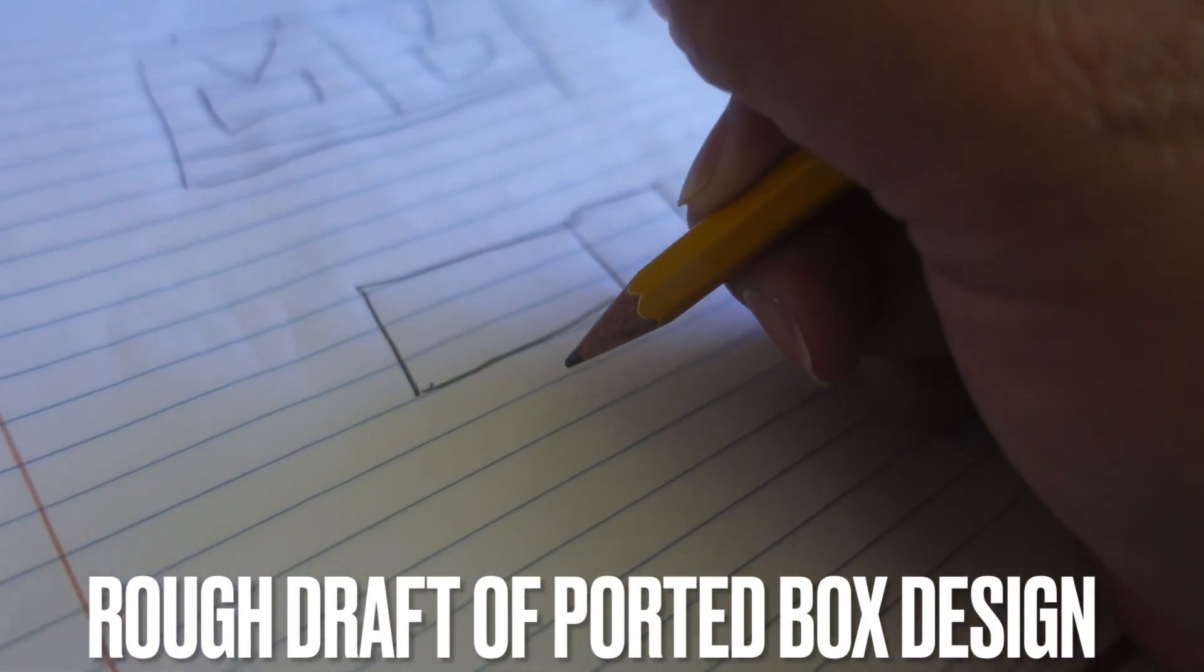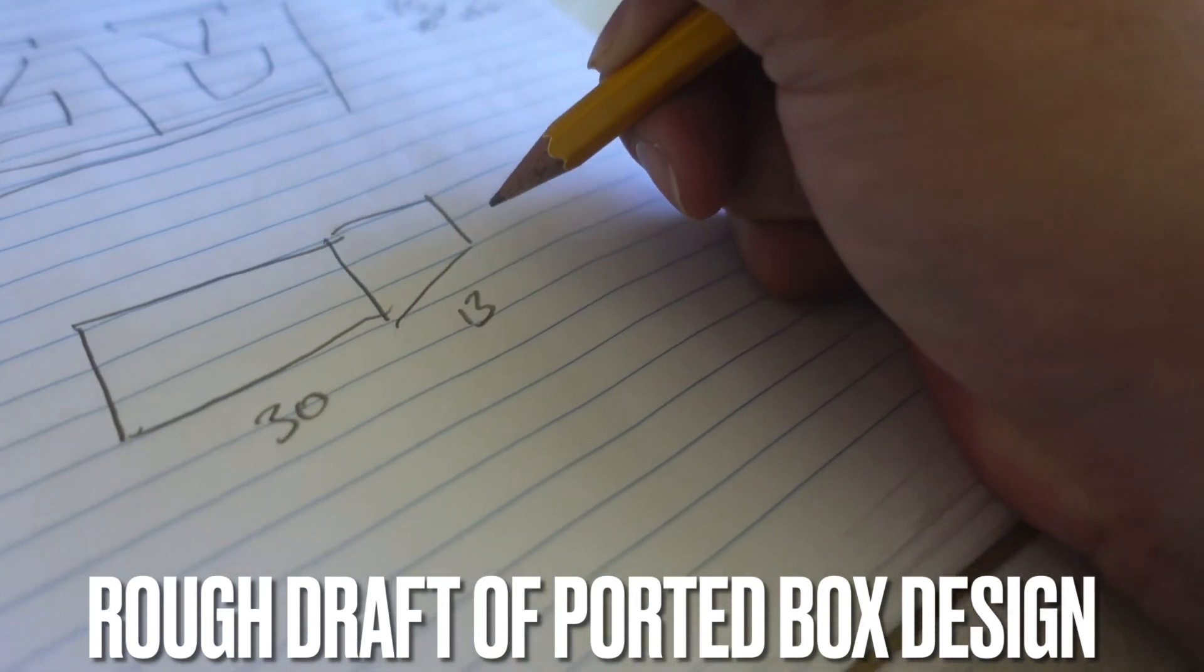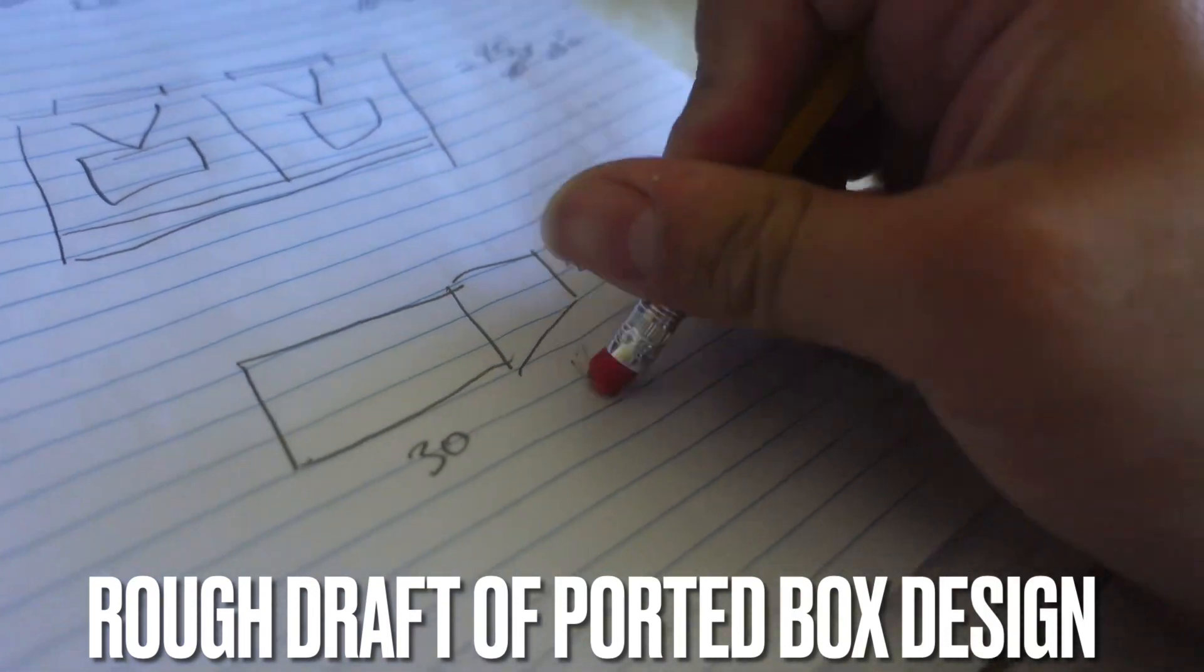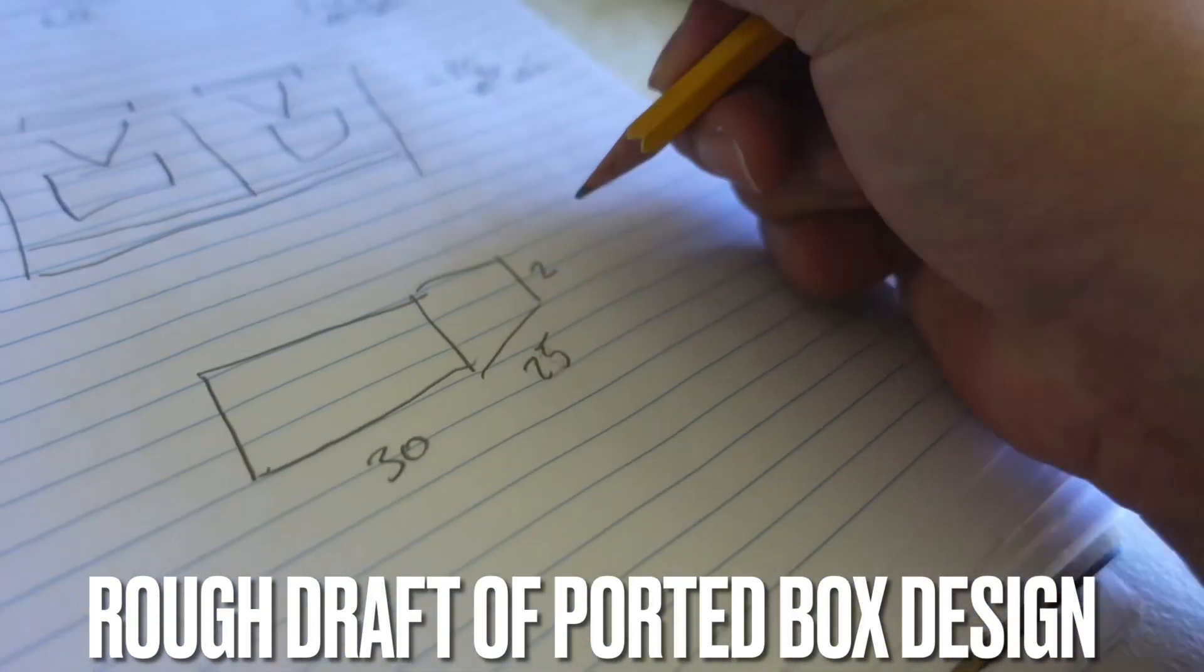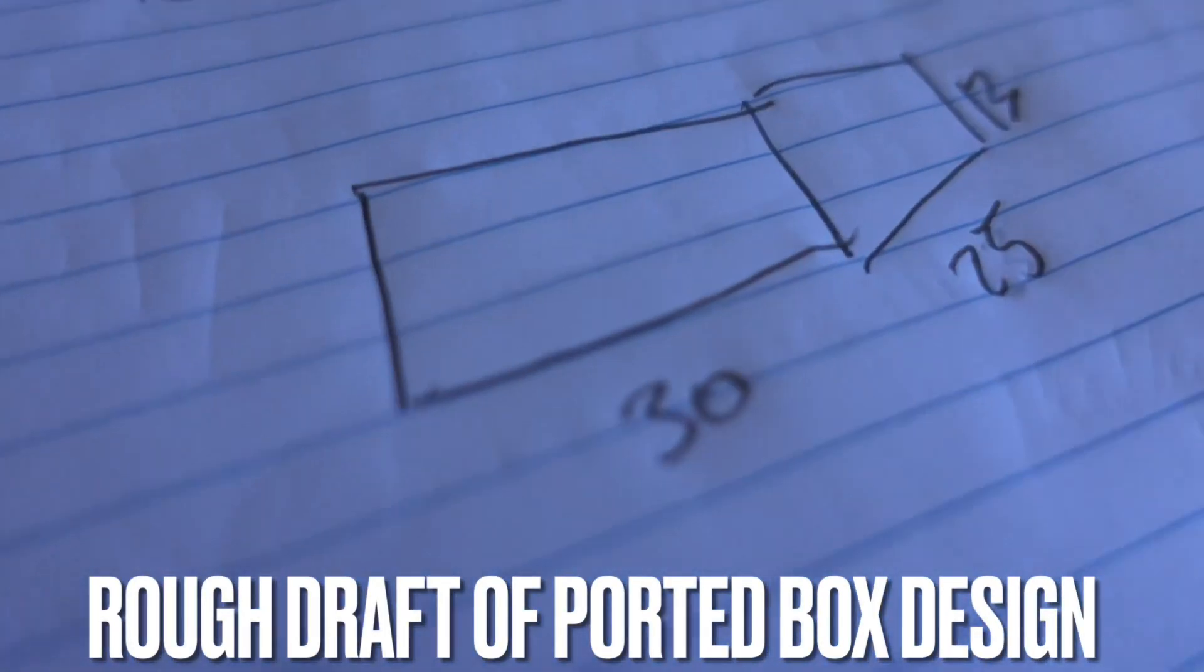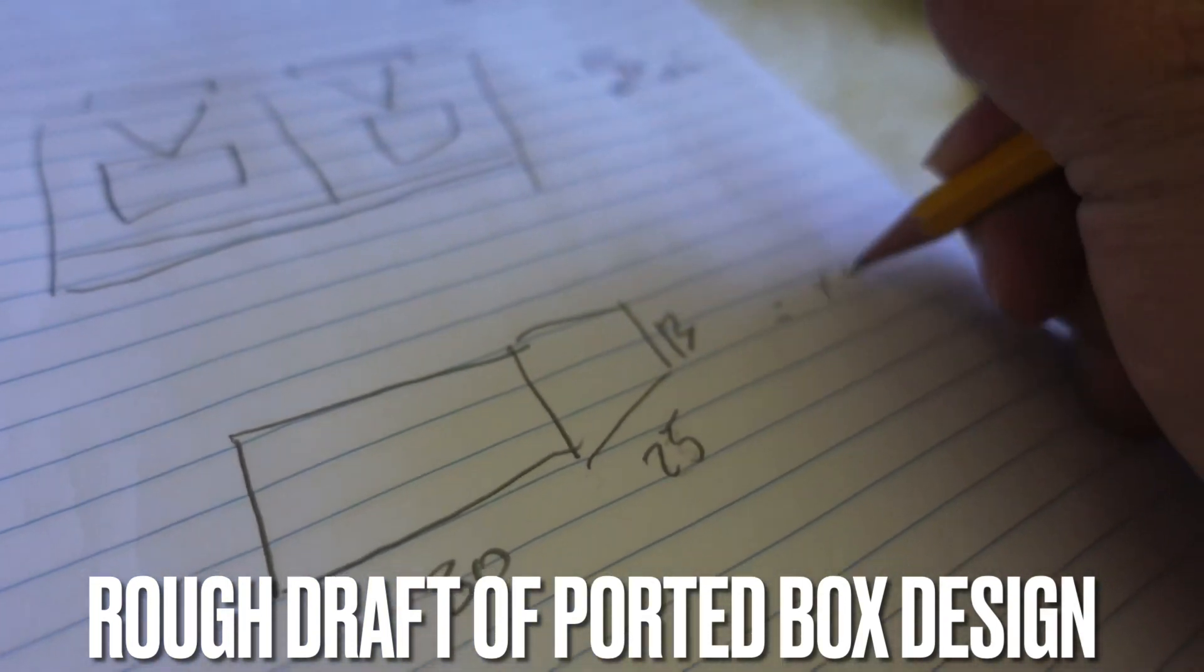Let's jot these numbers down. Box dimensions: 30 width, 13 height, and 25 depth. These are external numbers. Now we have our dimensions and this equals up to 4.45.